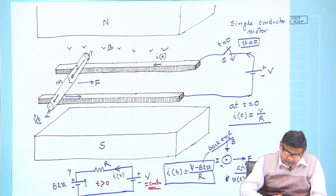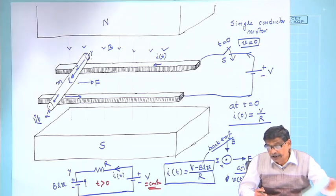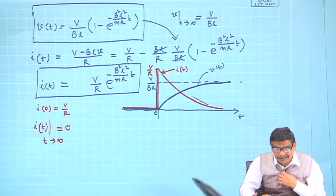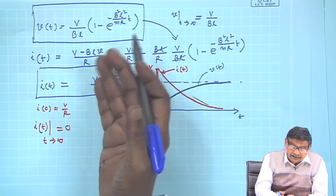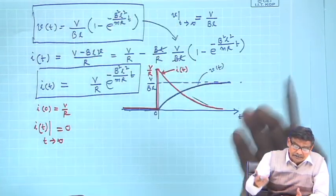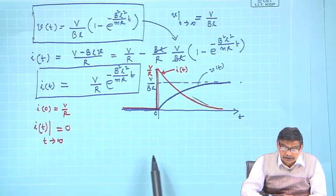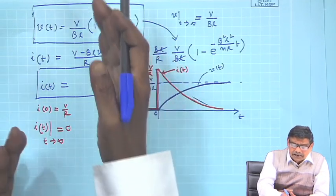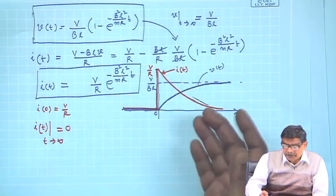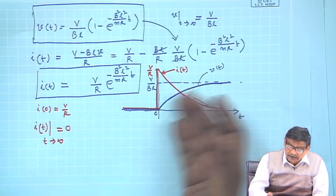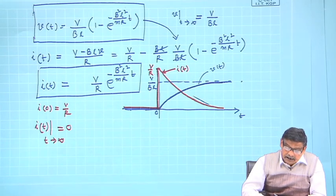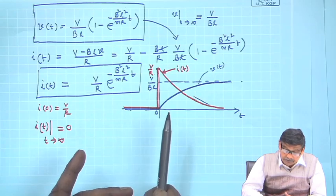The question is: do we have to wait until infinity for the velocity to reach its final value? No, it is like an RL circuit charging. You can see the equation V/R times (1 minus e to the power minus t over tau). It has a time constant, and after 2 or 3 time constants the velocity will essentially be constant and equal to V divided by BL, where V is the supply voltage.